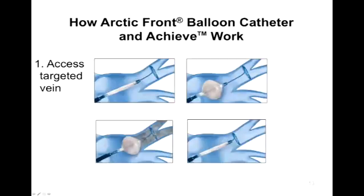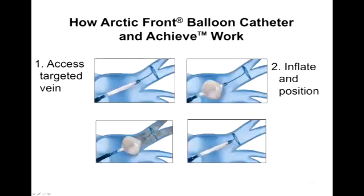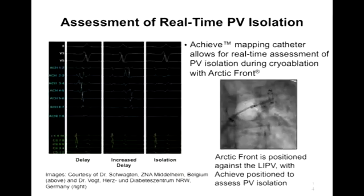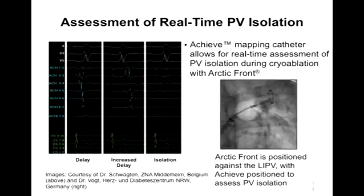We work inside the left atrium, which requires a puncture from one chamber to the other. First we access the targeted vein with the lasso catheter, then inflate the balloon and position it in the opening of the pulmonary vein, occlude and freeze and ablate that area, and re-examine for evidence that we've eliminated the potentials. The electrical signal that was present moves further out in time as freezing occurs and then becomes completely flattened — confirming successful isolation.